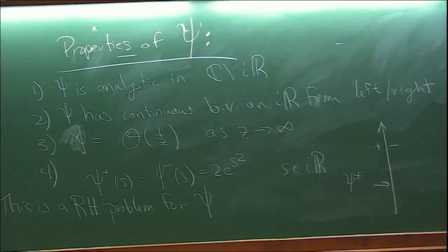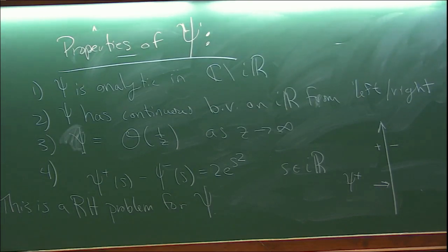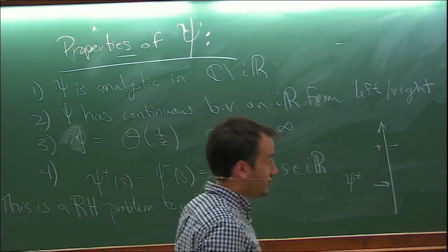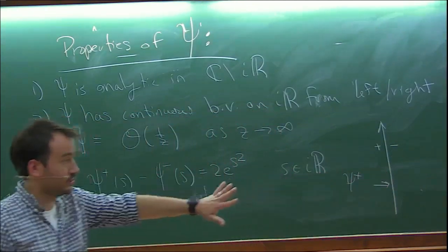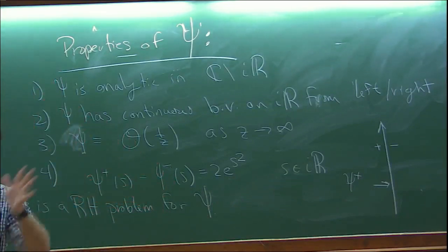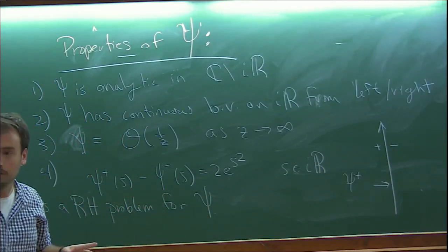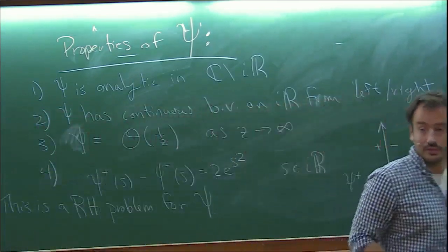If you chose a different function - for example, for Airy functions - you no longer have just a simple curve. You have Stokes rays that are off in the complex plane, and now you have three different jump contours to handle. For the Airy function you would have something like e^{z^{3/2}} up in the exponent. That comes exactly from the different leading-order asymptotic behavior.